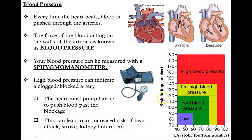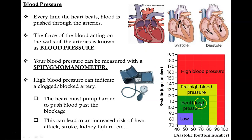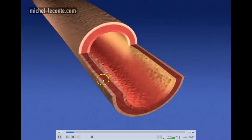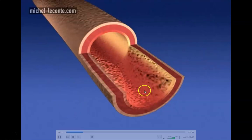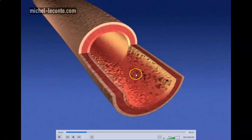The systolic pressure is the higher value — this pressure is what is occurring when your heart squeezes. The diastolic pressure is the lower value — that is the pressure of your blood vessels when your heart relaxes. By looking at these two numbers, you can identify where you are on this chart and whether or not you have high blood pressure, normal blood pressure, or low blood pressure. If you have high blood pressure, it could be because the walls of your blood vessels have too much cholesterol or fat buildup, so you have to really change your diet at that point.